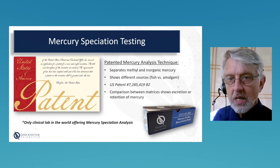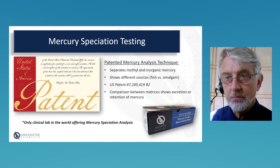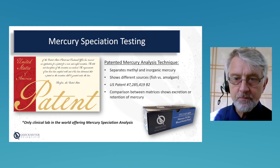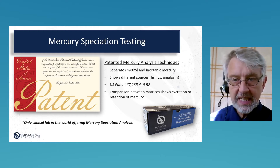Quicksilver Scientific is the only laboratory in the world to offer mercury speciation analysis. Mercury exists in the human body in two different forms: inorganic and methylmercury — also called organic mercury because the methyl group is an organic group. Those forms come from two different sources, primarily amalgam and dietary sources. They have two different relative toxicities, and they are excreted through two different primary organs — liver and kidneys.